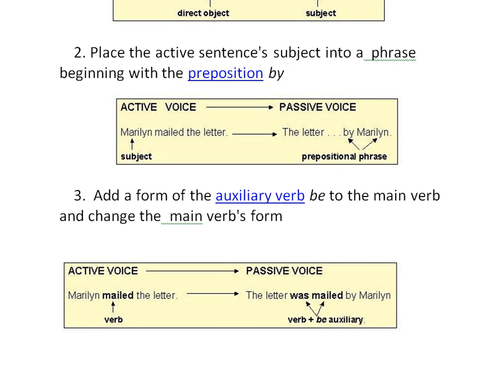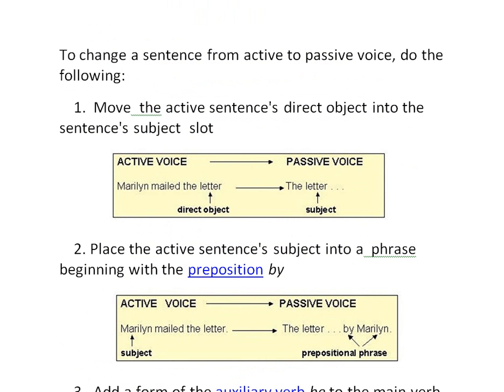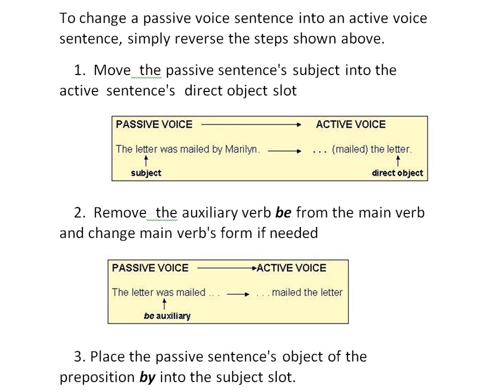So 'Marilyn mailed the letter' — 'mailed' is the verb — becomes 'The letter was mailed by Marilyn,' using verb plus auxiliary 'be.' With this, you can convert any sentence from active to passive voice. Now let's see how to convert a sentence from passive to active. To do this, we reverse the steps used above.